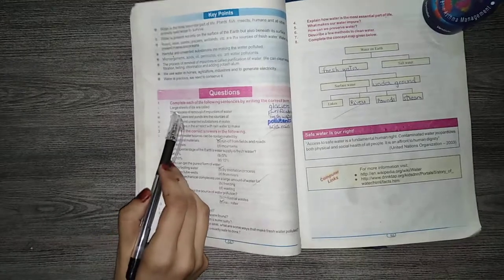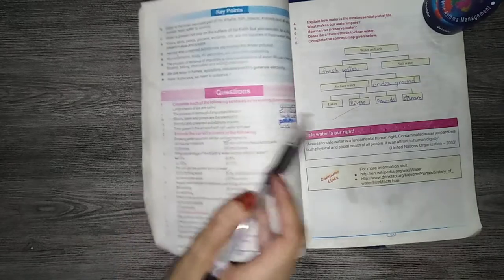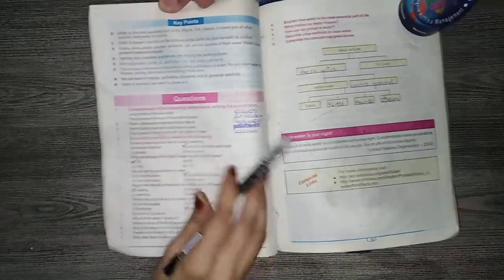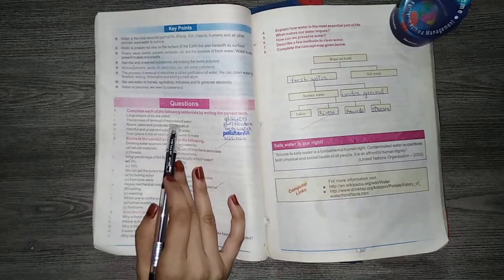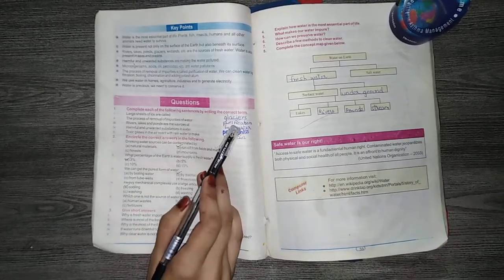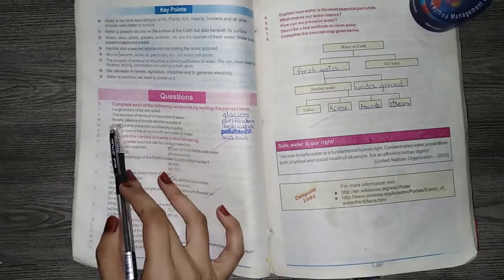First of all, the large sheets of ice are called glaciers. This answer is glaciers. Number 2, the process of removal of impurities of water. This answer is purification.